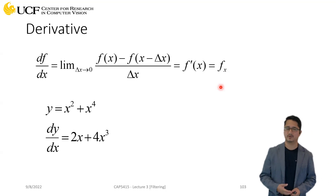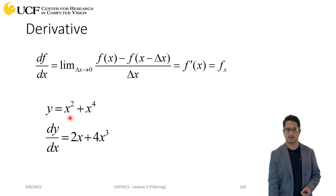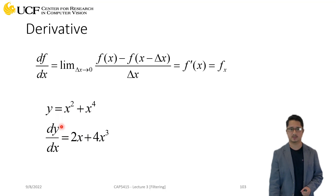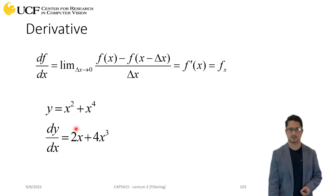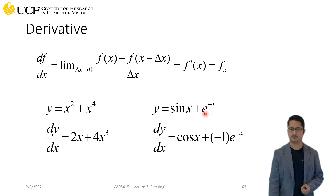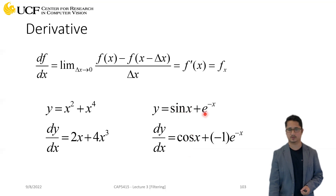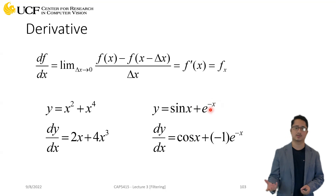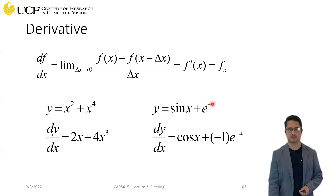A few simple examples: you might have a function like x-squared plus four-x. You can compute the derivative of this function with respect to x, represented as dy/dx, which gives two times x and four times x-cubed. Similarly, a derivative of a sine function gives you a cosine function, and if you compute the derivative of an exponential function it gives back your exponential with the sign used in the exponent.